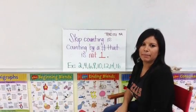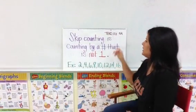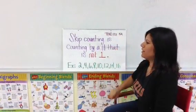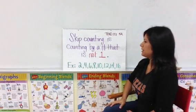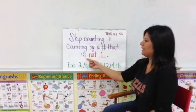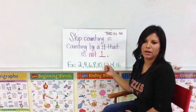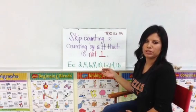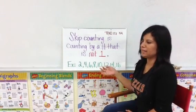Today we will be talking about skip counting. It comes from TEEC 17.158. Skip counting is counting by a number that is not one. So we're no longer going to be counting one, two, three, four, five. Now we're going to be using twos, fives, and tens.